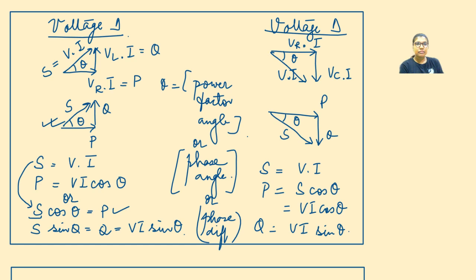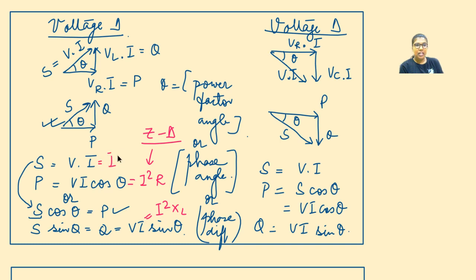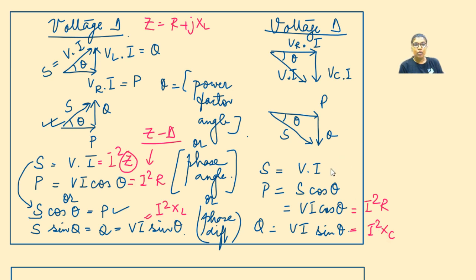From the impedance triangle, we derived the power triangle yesterday by multiplying I². So we can write: P equals V·I·cos θ equals I²R; for an RL circuit, Q equals V·I·sin θ equals I²·XL; and S equals V·I equals I²·Z. For an RL circuit, Z equals R plus j·XL. Similarly for an RC circuit: P equals I²R, Q equals I²·XC, S equals I²·Z, and Z equals R minus j·XC.